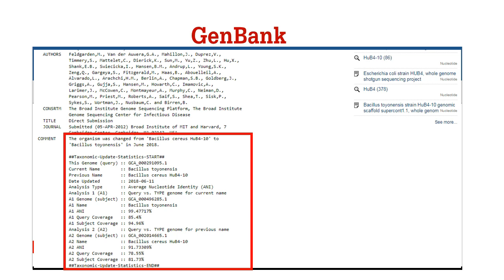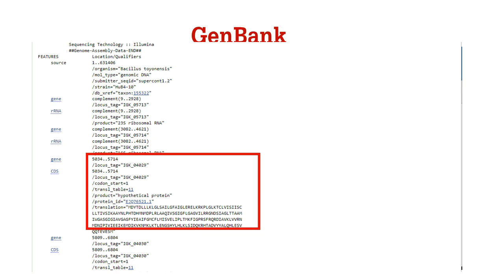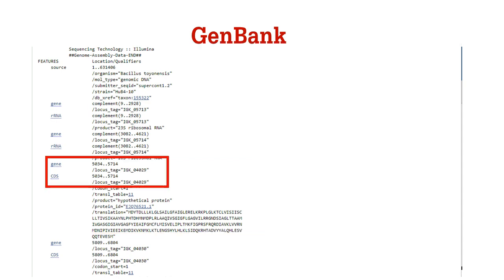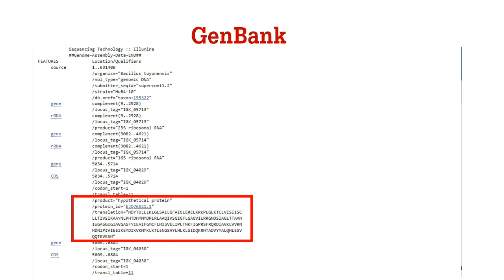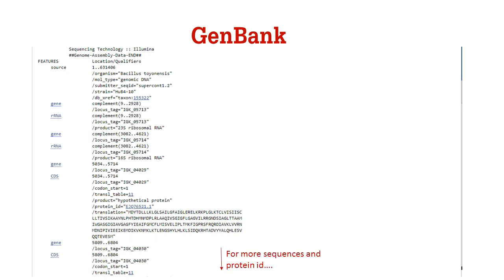If you scroll further, you will find what you are looking for. A nucleotide sequence is used to translate proteins. This page contains all the protein sequences that can be translated using this nucleotide. In the feature section, you can find the locus for a particular sequence. Here is the nucleotide sequence and its locus — for example, the nucleotide sequence from 5034 to 5714 base pairs encodes for a protein whose ID and amino acid sequence is given below. Similarly, you can find out which nucleotide sequence encodes for which protein.